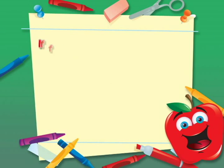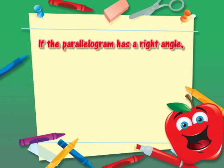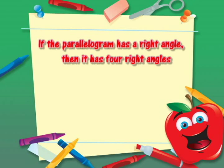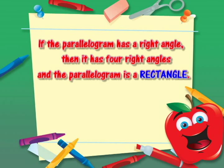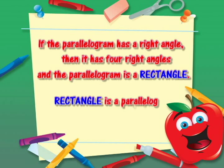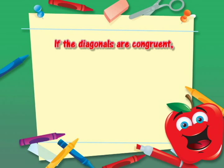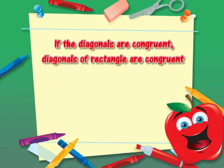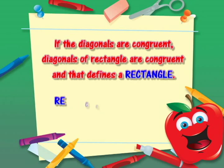Now let's sing again the theorems on rectangle. If the parallelogram has a right angle, then it has four right angles, and the parallelogram is a rectangle. Rectangle is a parallelogram. And that's the first thing to be considered on rectangle. Let's have another one — if the diagonals are congruent, diagonals of rectangle are congruent, and the rectangle is a parallelogram.